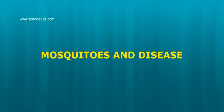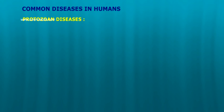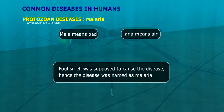Mosquitoes and disease. Protozoan diseases: Malaria. 'Mala' means bad, 'area' means air. A foul smell was supposed to cause the disease, hence the disease was named malaria.